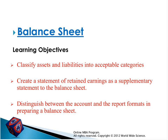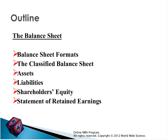Let me explain what objectives come in the balance sheet. We are going to classify assets and liabilities. We will create the statement of retained earnings as a supplemental statement. We will also distinguish between account and report formats in the balance sheet. The balance sheet has two formats: horizontal and vertical. Under the balance sheet classification, we have assets, liabilities, and shareholders' equity, and we can see the statement of retained earnings as well.